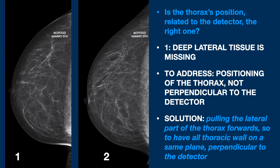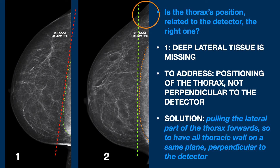Image one: posterior tissue is documented more medially than laterally, as you can see from the shape of the pectoralis major. So the thoracic wall is not on the perpendicular plane to the detector, as it is in the second image. The documentation of deep lateral tissue is proven by the presence of the lateral connection to the thorax, as you can see.